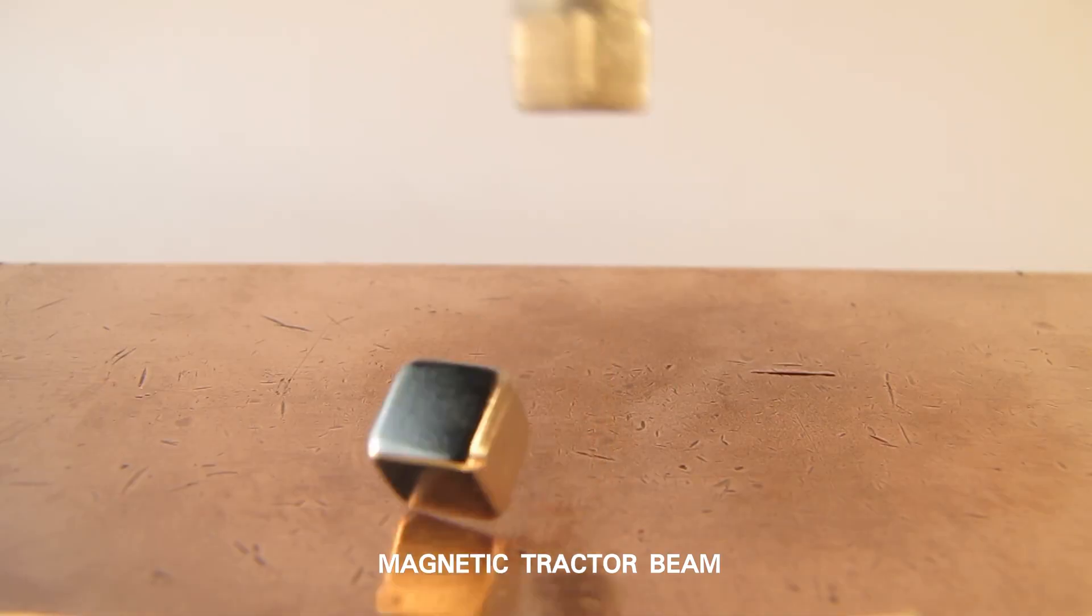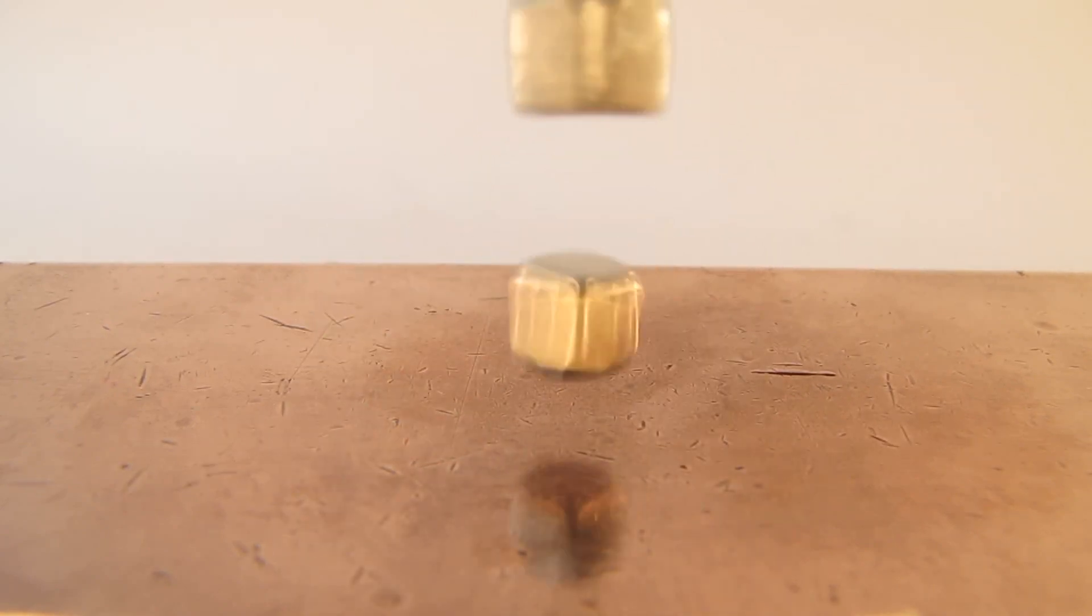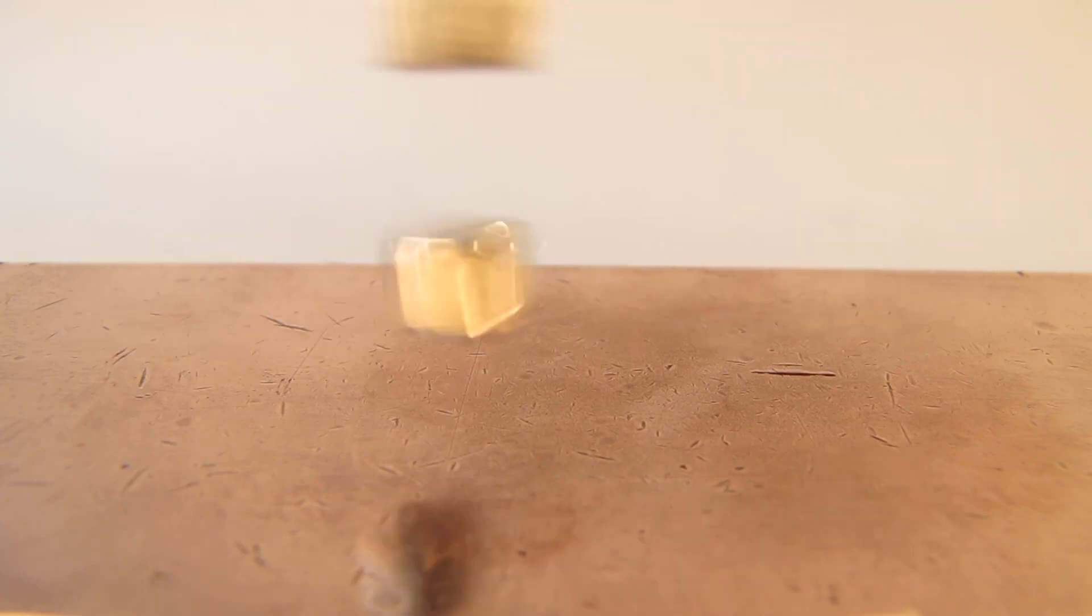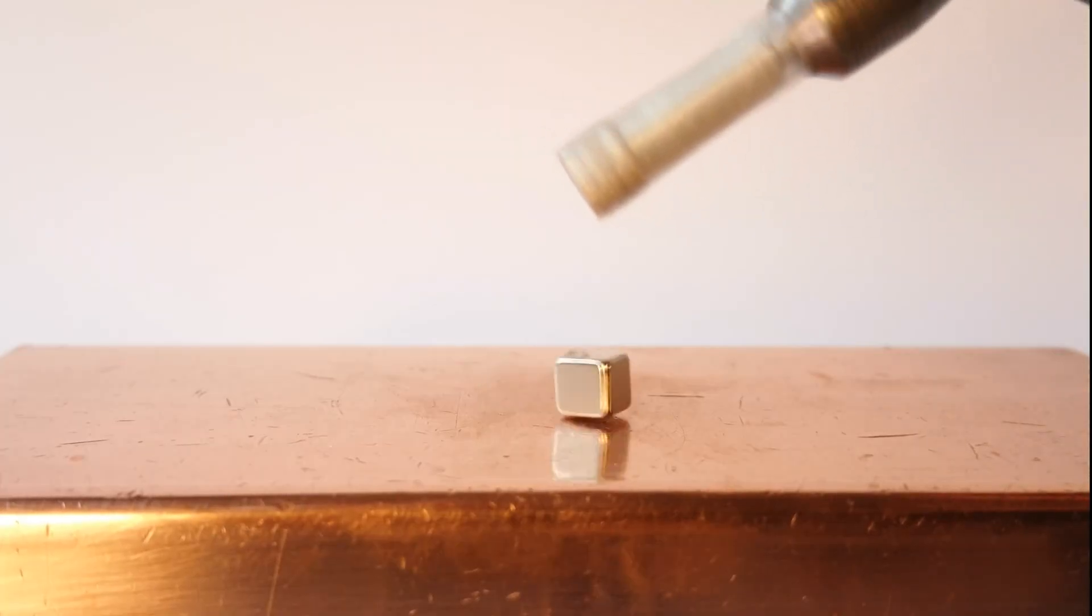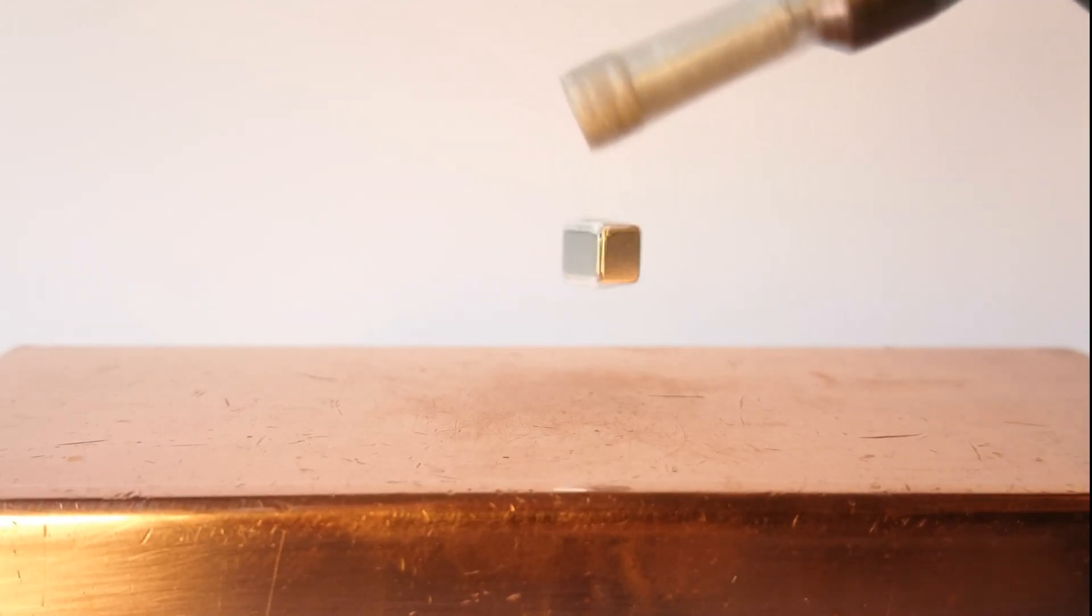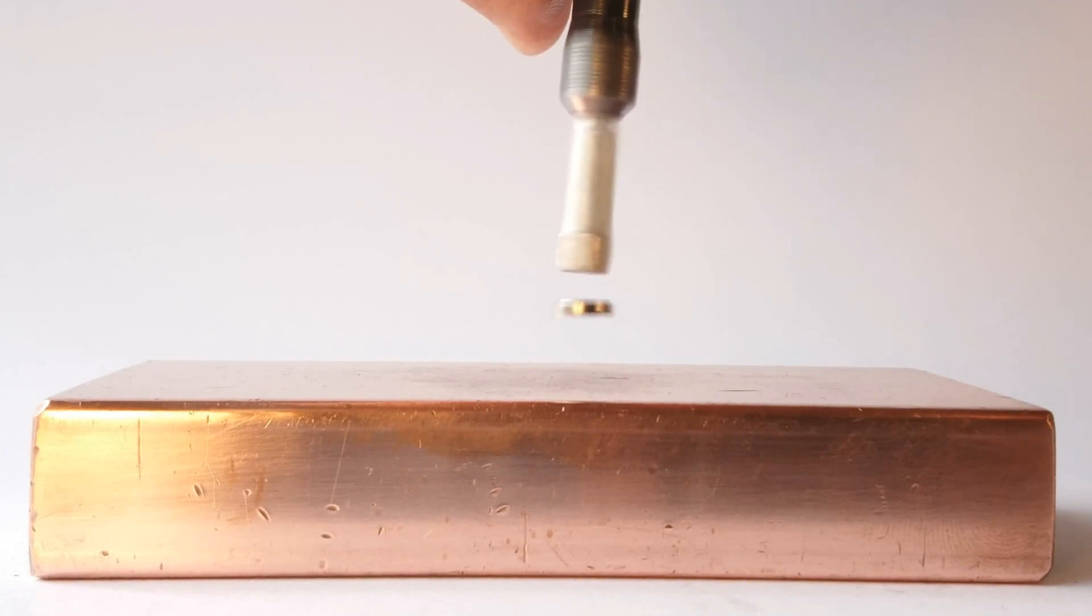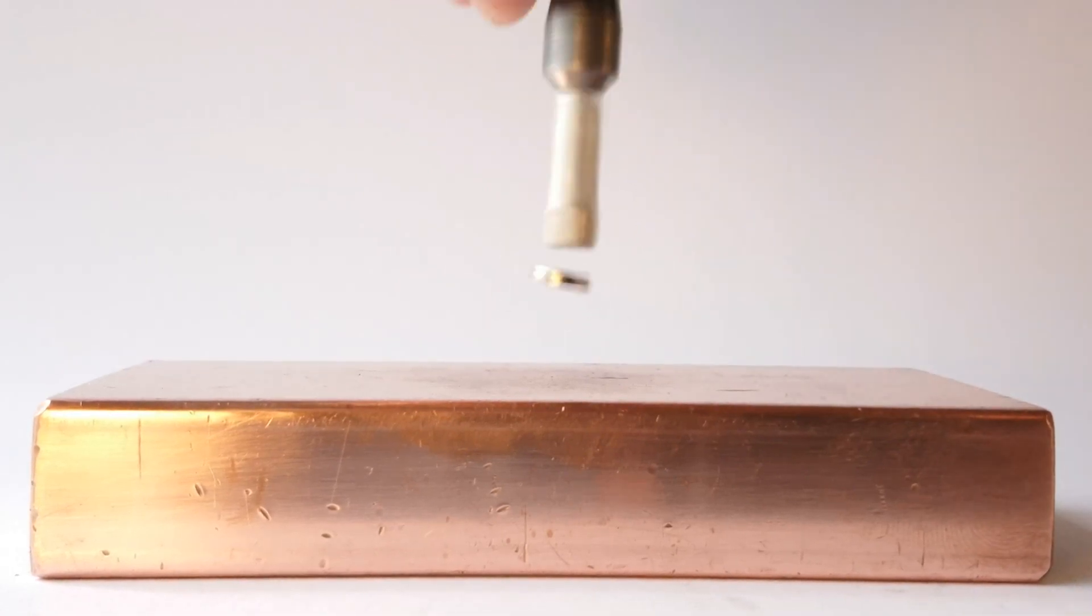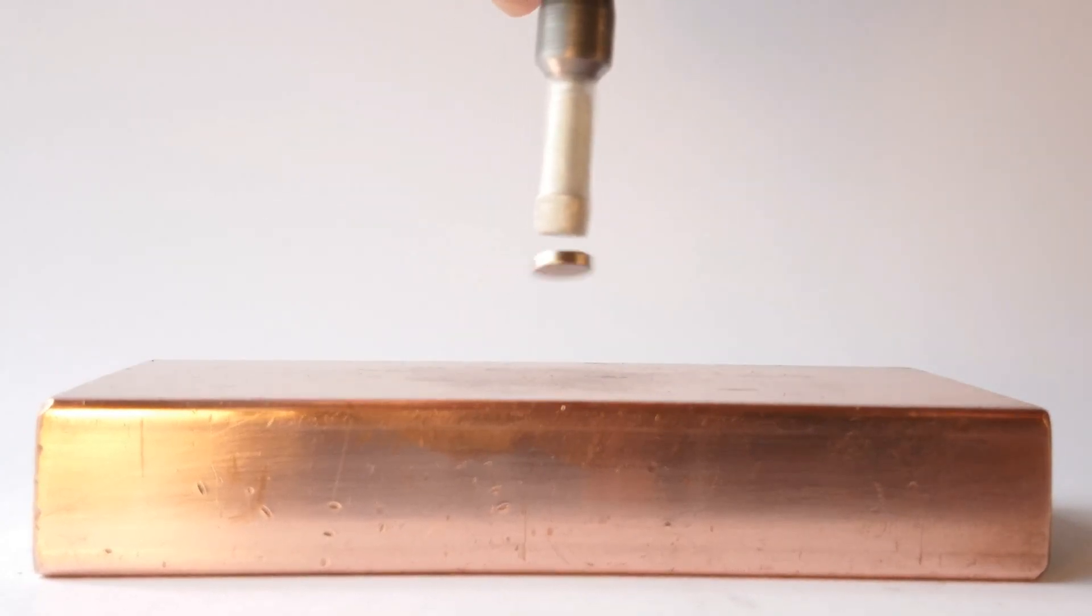When a magnet is spun at a certain RPM rate, it is possible to levitate another magnet under it. The spinning magnet attached to a power tool locks the levitating magnet at a distance of about 5 to 10 mm. The levitation gap can be adjusted by changing the rotation speed. Faster RPM means a smaller levitation gap. The tractor beam effect is also much tighter with higher RPM. Copper isn't necessary for the effect, but it helps to stabilize the magnet.